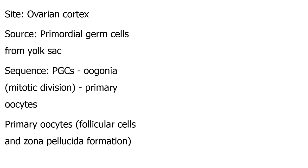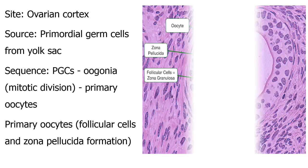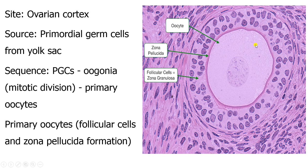The primary oocytes are identified by having follicular cells and zona pellucida formation. Here you can see the primary oocyte, the zona pellucida, and then you have the follicular cells — what we call the zona granulosa.